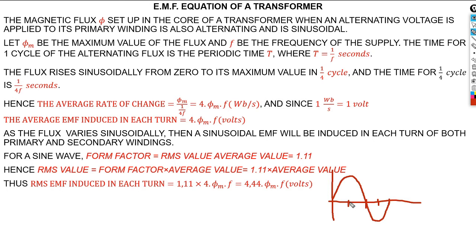At one quarter of the cycle, the flux is already reaching its maximum value. That's why we say one quarter of the circle — the time will be one over four times the period.